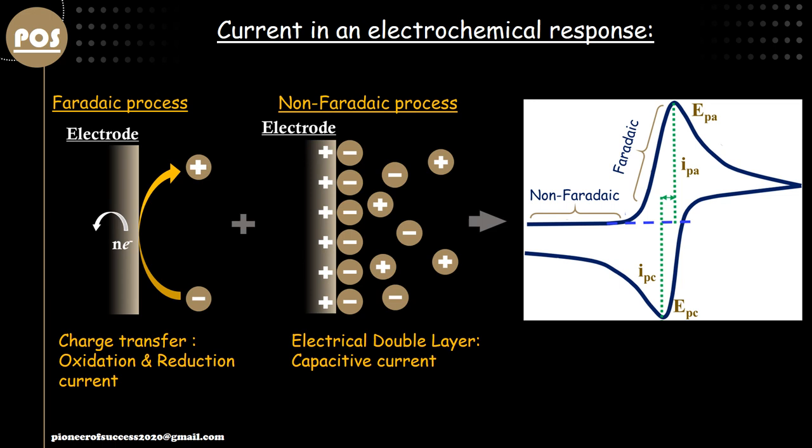Whenever the ions are coming from the bulk solution due to the electric field attraction, their movement leads to current, and that current is called capacitive current. This point is very important. The purpose of DPV is to nullify this charging current and get information about only the Faradaic current.